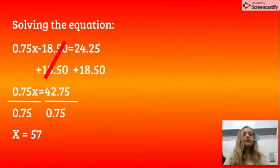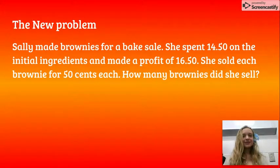Now that you know how to solve this type of equation, try this one: Sally made brownies for a bake sale. She spent $14.50 on the initial ingredients and made a profit of $16.50. She sold each brownie for 50 cents each. How many brownies did she sell?